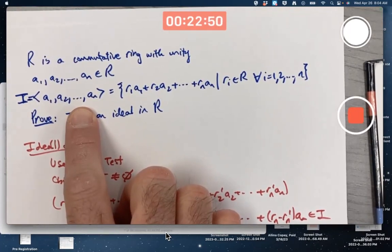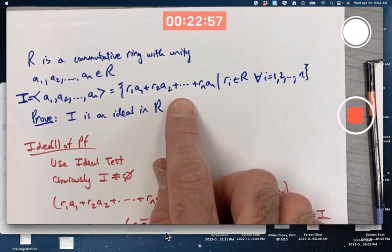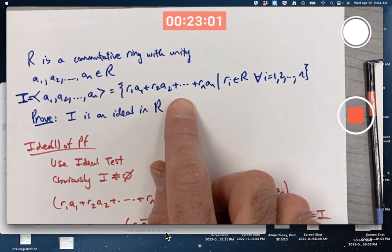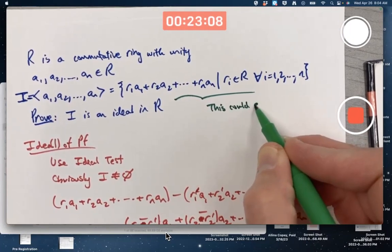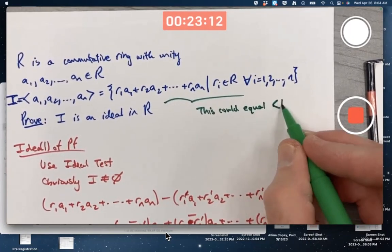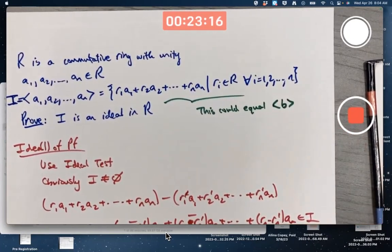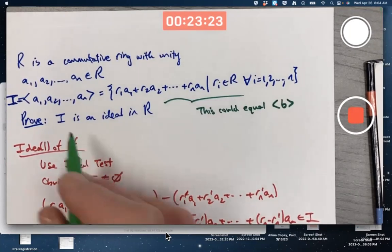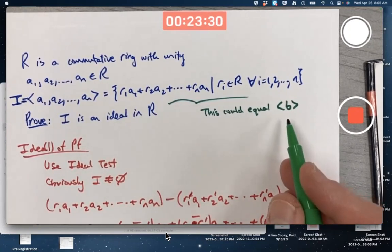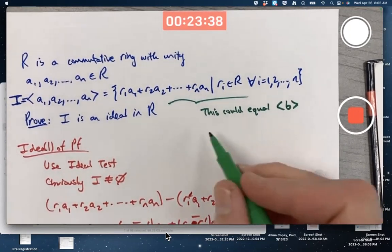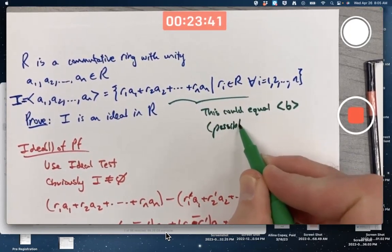However, little word of warning, it could be a principal ideal still. It's possible that we could find some other element, call it B. This could equal the principal ideal generated by some individual element. That's possible. Okay? So just realize that going forward. Sometimes ideals that are in this form that don't look like they're principal ideals could equal the principal ideal, the principal ideal generated by some element. Okay? That's possible. Not guaranteed, but possible. Possible, but not guaranteed.